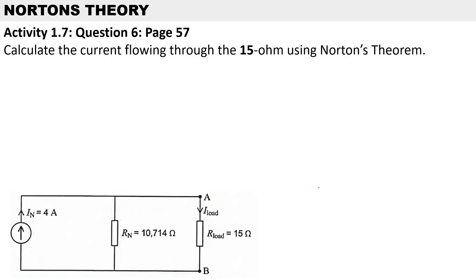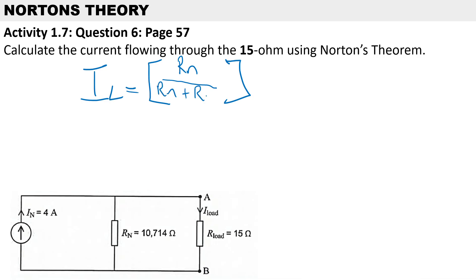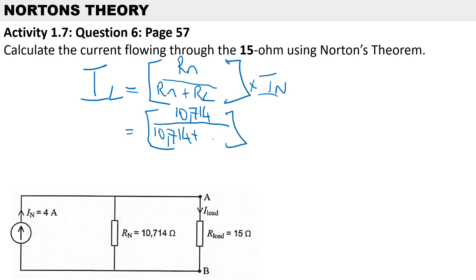Now that we have Norton's resistance, we can calculate the load current using Norton's equivalent circuit. Applying the current divider rule: R_norton over (R_norton plus R_load), multiplied by Norton's current. Substituting: 10.714 over (10.714 plus 15 ohms), multiplied by 4 amps, gives a load current of 1.667 amps. Thanks very much for watching this video.